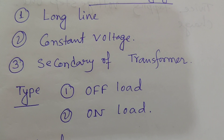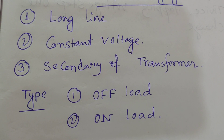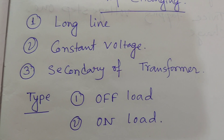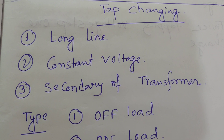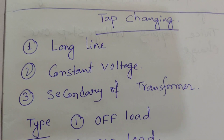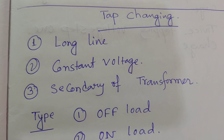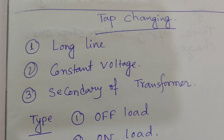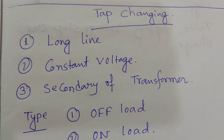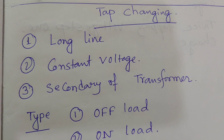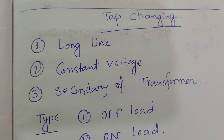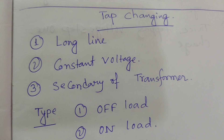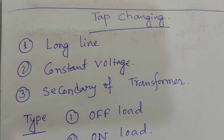In the generating station, transmission section, or distribution section, the voltage is controlled by changing the transformer tapping. Transformer tapping is very important and is used for both short distance and long distance lines. For excitation control methods, it is applicable for short lines but not for long lines, because at the end of a long line we do not get a constant voltage.